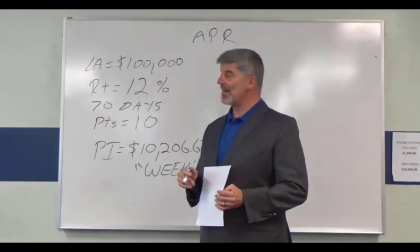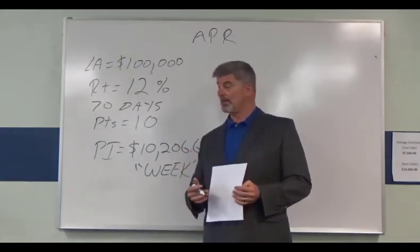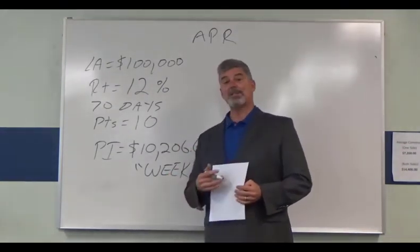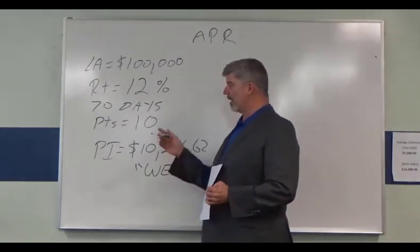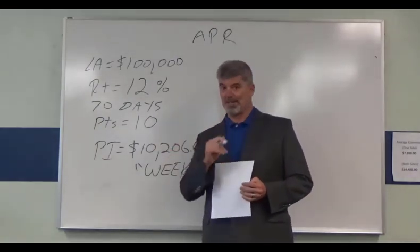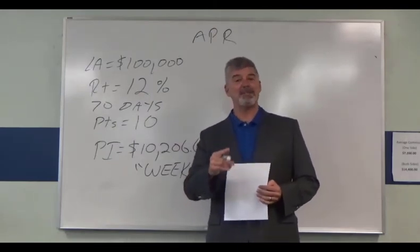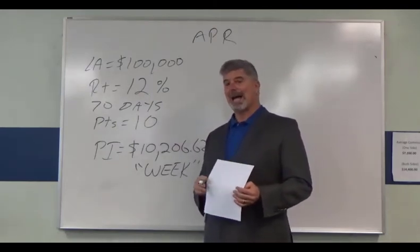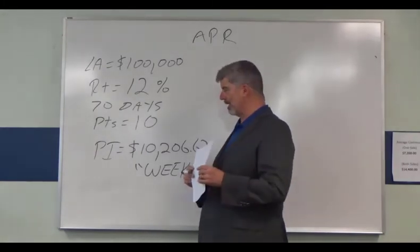In this scenario, we have a loan amount of $100,000. The rate is kind of high — it's 12%. There are 10 points on this loan, but the payoff term is 70 days. So how would we calculate the APR for a loan like this?